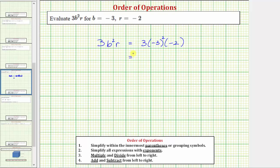Following the order of operations, the first step is to simplify the exponents. The square of negative three means we have two factors of negative three, and because negative three times negative three is equal to positive nine, this simplifies to three times nine times negative two.